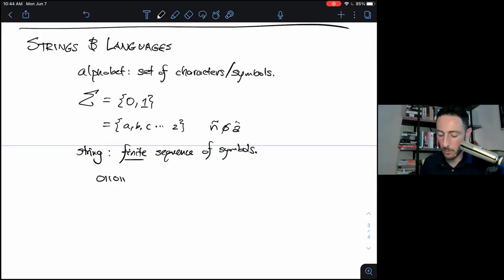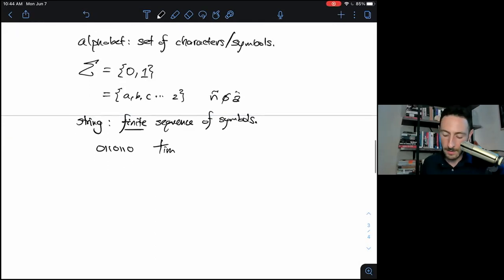And there's no limit to what symbols you could put in an alphabet. And then a string is just a finite, and this bit's important, sequence of symbols. For instance, 0, 1, 1, 0, 1, 1, 0 is a string on the binary alphabet. My name, Tim, well, maybe with a lowercase t as I've defined it, is a string in the Roman alphabet. And then finally, a language is a set of strings.